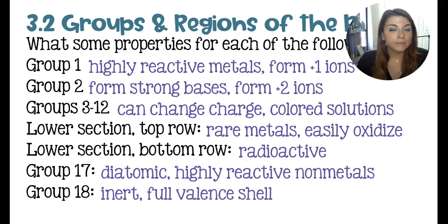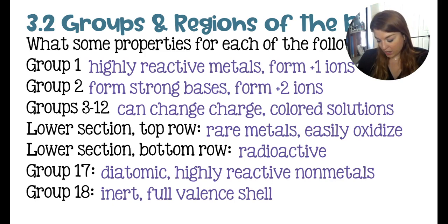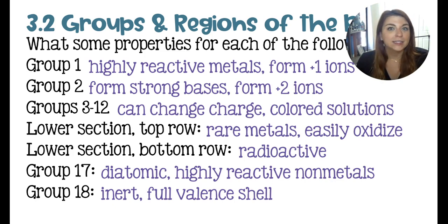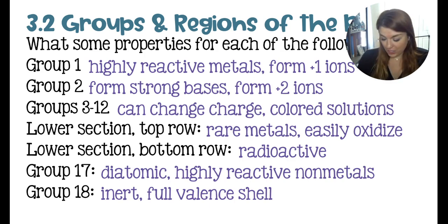Group 17 — the halogens — are diatomic and they are the most reactive of the non-metals. They are poisonous. Fluorine and chlorine are gases, bromine is a liquid, and iodine is a solid at room temperature. Group 18 is inert, meaning they are unreactive and they have a full valence shell — usually that means eight valence electrons, but in the case of helium, it just means two.